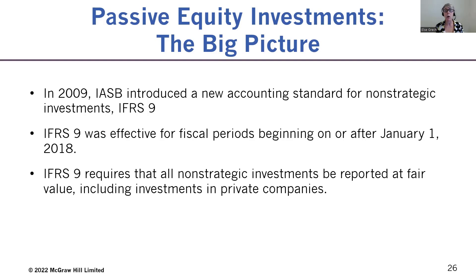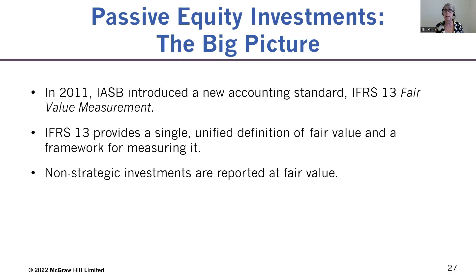Under IFRS 9, all non-strategic investments had to be reported at fair value, including investments in private corporations. The focus was on providing improved and useful decision-making information about equity investments for users of financial statements — really to simplify the accounting and improve comparability. In addition, in 2011, IFRS 13, Fair Value Measurement, was introduced, providing a single unified definition of fair value, a framework for measuring it, and details on required disclosures about fair value measurement.